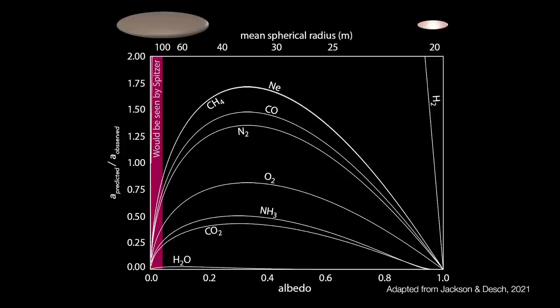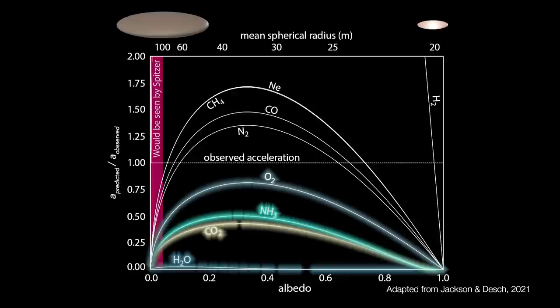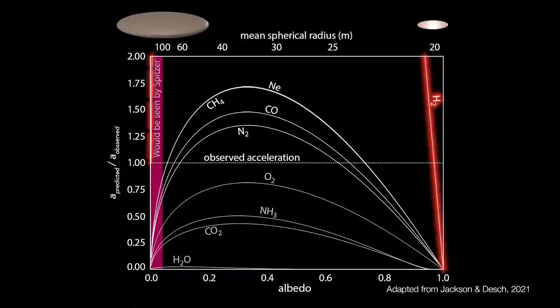So chances are that Oumuamua is likely pancake-shaped with axis ratios of about 6 to 1. Jackson and Desch calculated the acceleration for different kinds of ices over a range of size and albedo combinations. In other words, Oumuamua could have been small and shiny, or it could have been larger and darker. Only, not too large, or else Spitzer would have seen it. Then they compared the computed accelerations to Oumuamua's observed acceleration. Water, CO2, ammonia, and oxygen ices were immediately ruled out because they couldn't accelerate Oumuamua fast enough. By contrast, hydrogen ice provides so much acceleration that Oumuamua would have had to have been very small with an albedo close to 1.